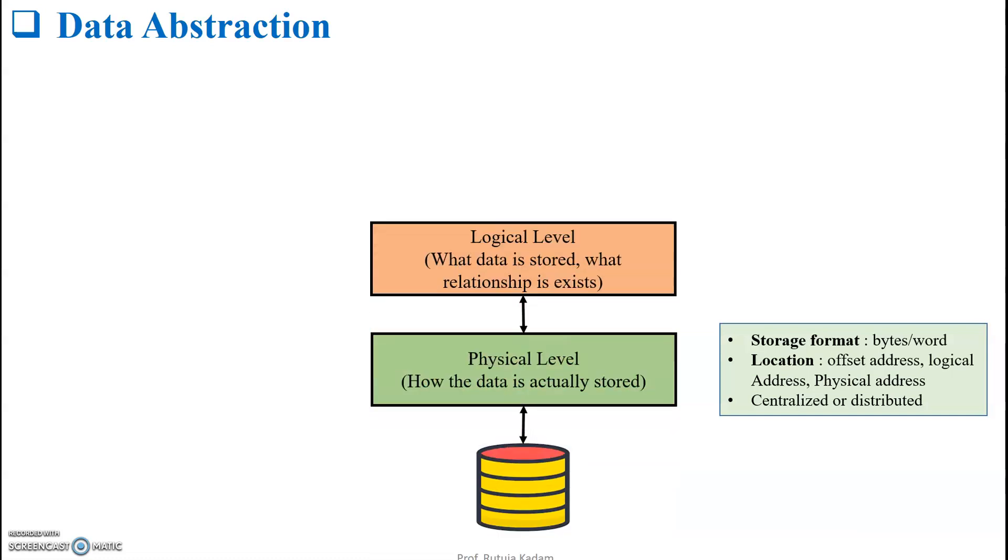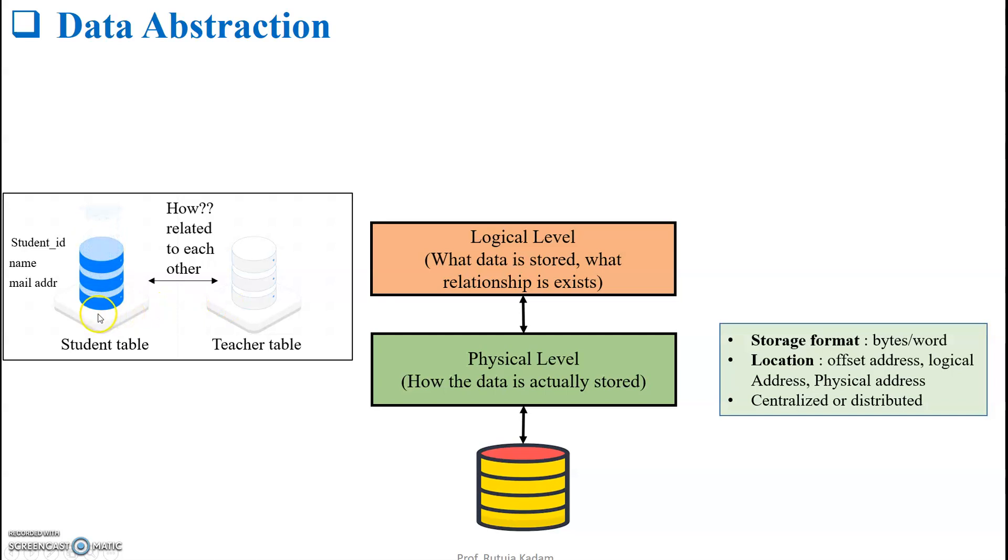Let us go to the next level, the logical level. What data is stored and what relationship exists between the data? Now if you look at this example, there is a student table and a teacher's table. The student table has its own attributes: student ID, name, and mail address. This is the structure of the student database. But student and teacher are also related with each other. How they are related is also represented in logical level. So how the data is stored and what are the relationships among the databases is stored in logical level.